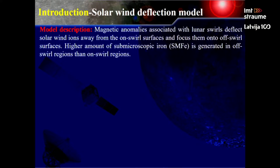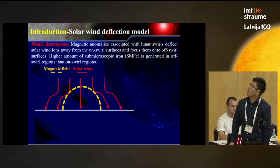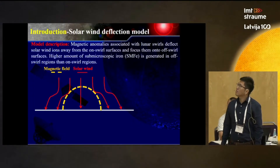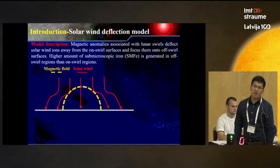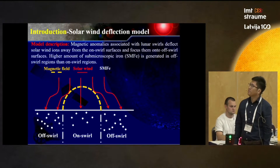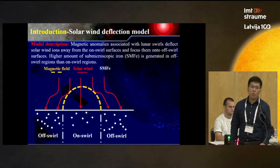Many hypotheses have been proposed to explain the formation of lunar swirls. One leading hypothesis is the solar wind deflection model. This model states that a magnetic field above the lunar surface can deflect solar wind ions away from on-swirl surfaces and focus them onto off-swirl surfaces. A higher amount of sub-microscopic iron — we can also call it nanophase iron — will be generated in off-swirl regions. We know that sub-microscopic iron can greatly lower the reflectance of lunar soils.